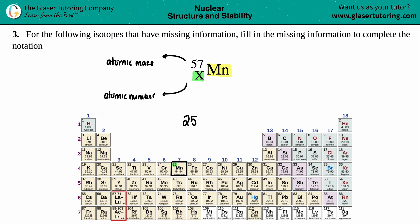So this has got to be a 25. If you did want to rewrite it over, you would put a 57 on the top, the 25 now goes on the bottom, and then Mn is your element. And that's it.